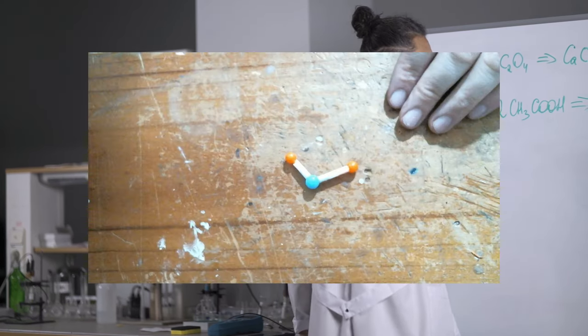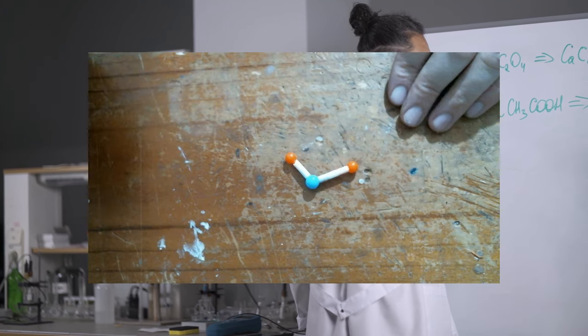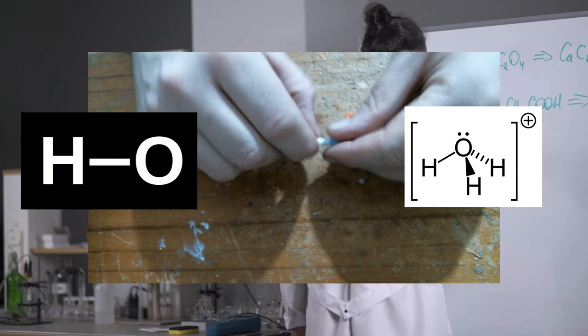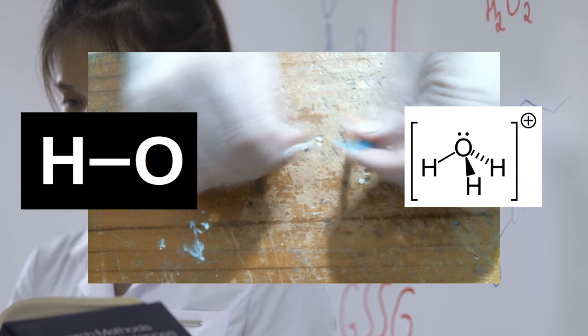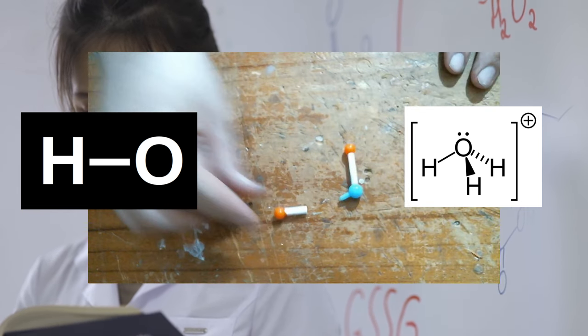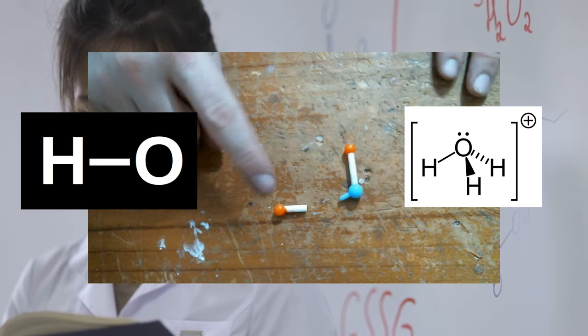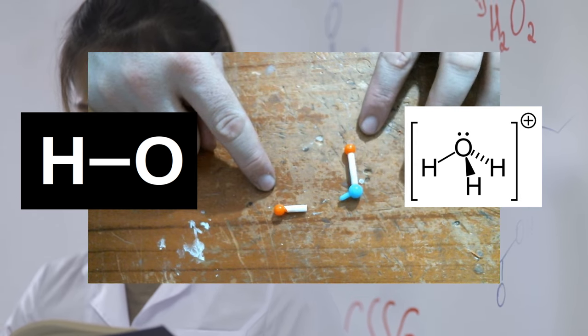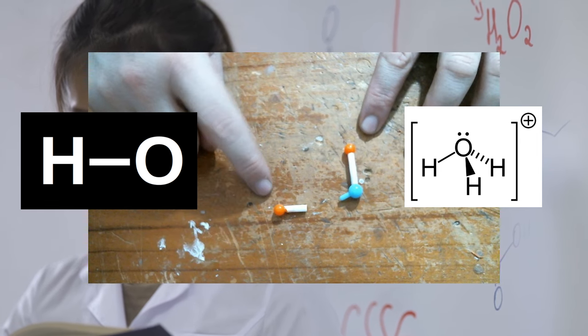This is all down to the way that water can effectively spontaneously ionize. This produces your hydroxide ions and your hydronium cations. The hydroxide is the hydrogen oxygen, and the hydronium is just the hydrogen ions.